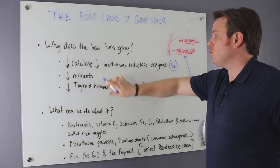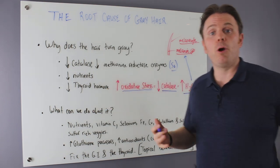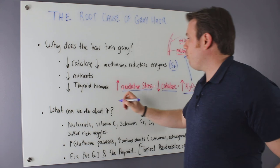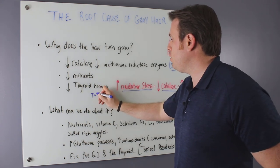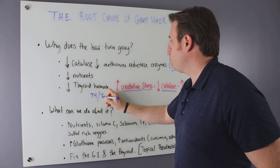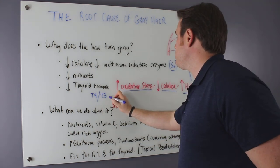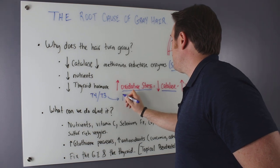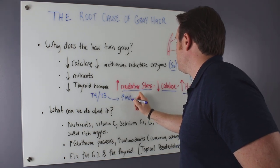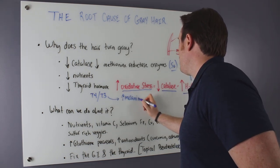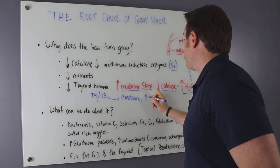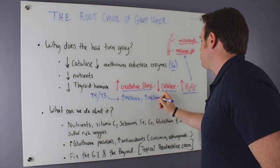So nutrition, we'll go more into those. And then, of course, thyroid hormone plays a huge role. T4 and T3 play a huge role on your melanocytes. And T4 and T3 stimulate, can stimulate melanin and, of course, melanocyte growth.